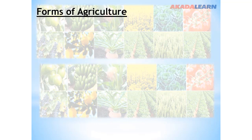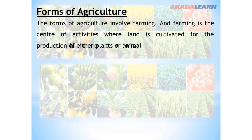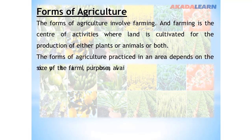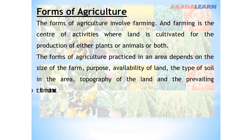The forms of agriculture involve farming, and farming is the center of activity where land is cultivated for the production of either plants, animals, or both. The forms of agriculture practiced in an area depend on the size of the farm, purpose, availability of land, type of soil in the area, topography of the land, and the prevailing climatic condition.